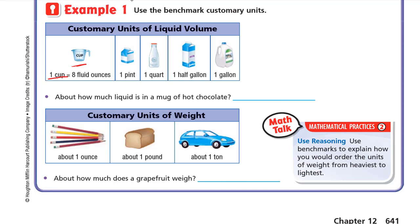So again: the cup is eight fluid ounces, the pint is two cups, the quart is two pints, the half-gallon is two quarts, and the gallon is four quarts. For the question about how much liquid is in a mug of hot chocolate — it's not a gallon, half-gallon, or quart. A quart is one liter, which is too large, so the answer is about one cup.